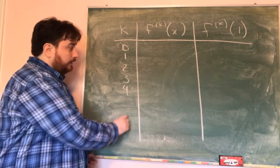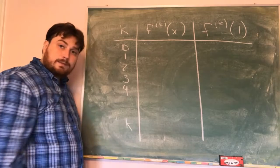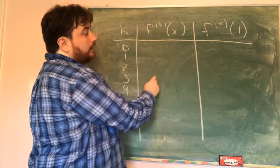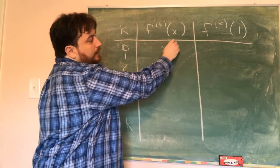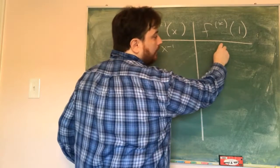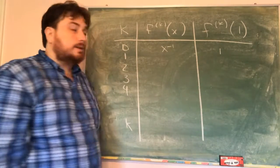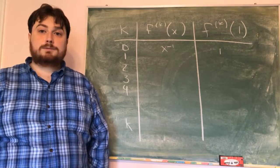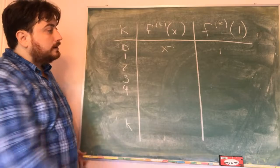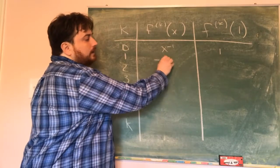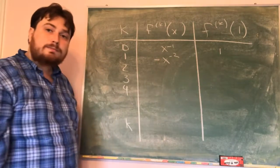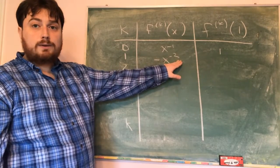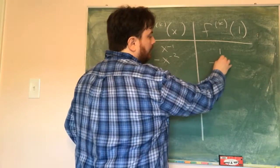Hopefully after that we can find a general case for the k-th case. If we're taking the 0th derivative, that's the original function, x to the negative 1. If I plug 1 into that, 1 to the negative 1 is 1. Then the derivative of x to the negative 1 is negative x to the negative 2. Plugging in 1, we get negative 1 to the negative 2, which is negative 1.